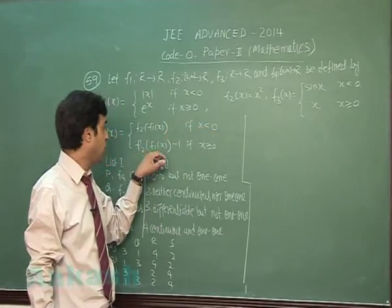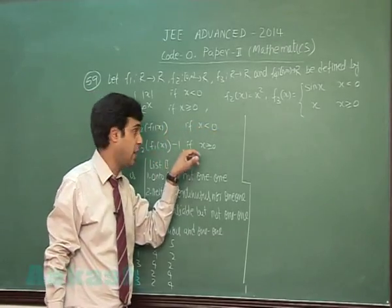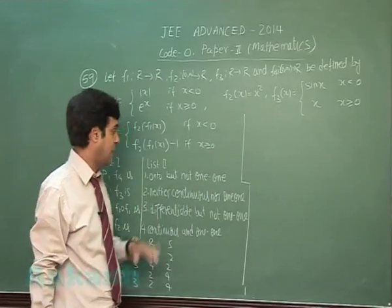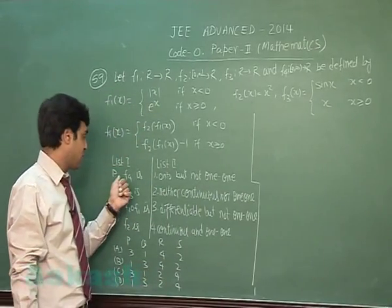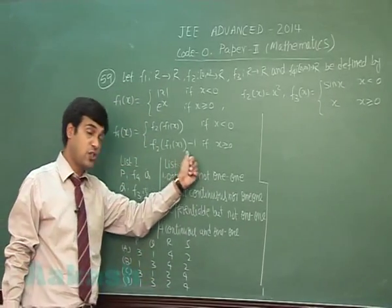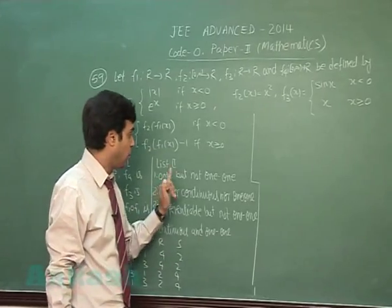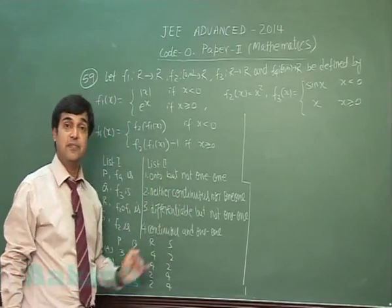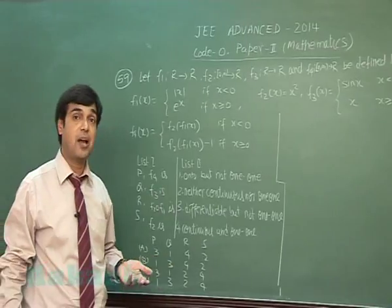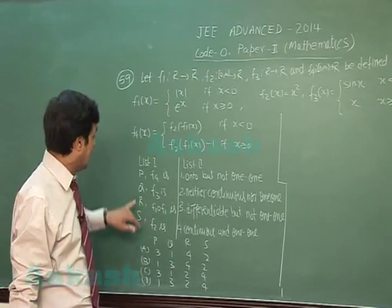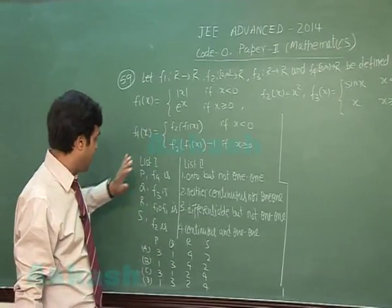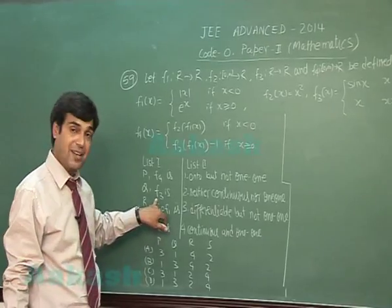While f4 is f2 of f1(x) for x less than 0, and f2 of f1(x) minus 1 for x greater than or equal to 0. Now list 1 is talking about functions, list 2 is talking about onto, one-one, continuity and differentiability, and based on that we have to choose from the given options.